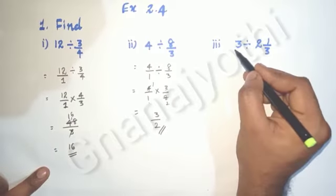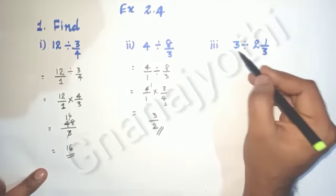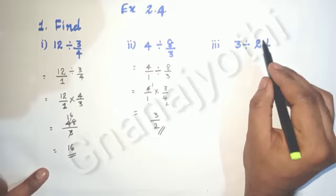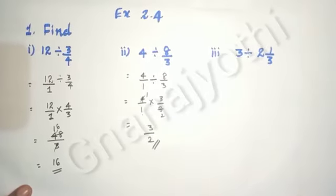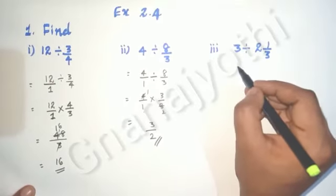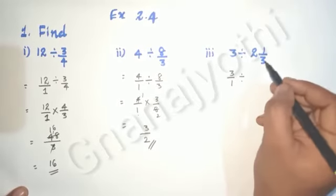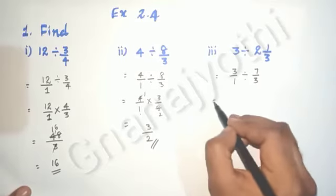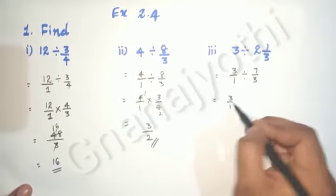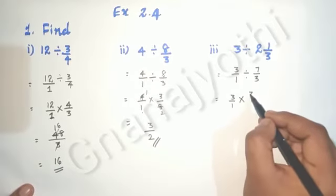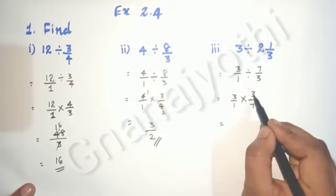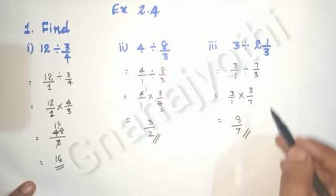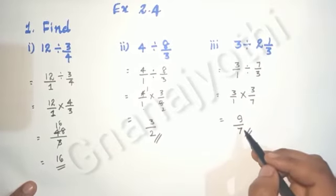Now we will see the third question, where there is a mixed fraction: 3 divided by 2⅓. The first thing we do is convert the mixed fraction into an improper fraction. 3 has no denominator, so we write it as 3/1. Converting 2⅓: 3 × 2 = 6, plus 1 = 7, so it becomes 7/3. Now reciprocal: 3/1 — division becomes multiplication — and 7/3 becomes 3/7. Multiplying: 3 × 3 = 9 upon 1 × 7 = 7. Therefore, 3 divided by 2⅓ gives us 9/7.